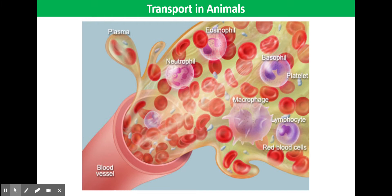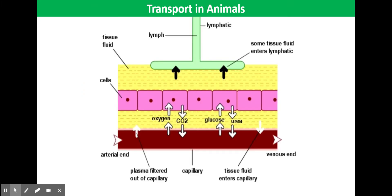Tissue fluid is similar to blood plasma, but it does not contain most of the cells found in the blood, and neither does it contain plasma proteins. Tissue fluid is formed by plasma leaking from the capillaries. It surrounds the cells in the tissue and supplies them with the oxygen and nutrients they require.